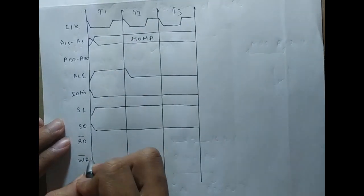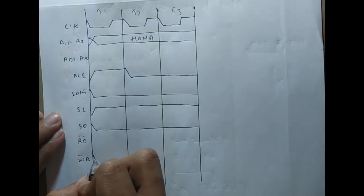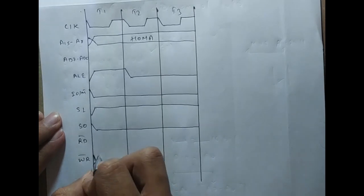Since this is a memory read operation, we can make the write signal disabled by making it high.